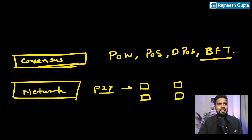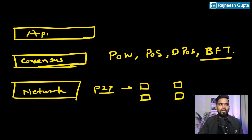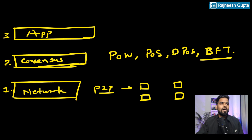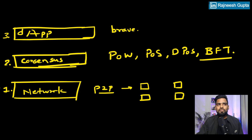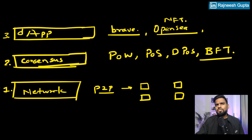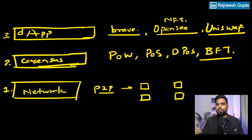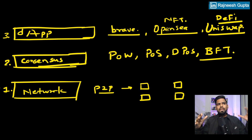On top of that we have our application layer. First is the network, second is consensus, third is the application layer — and that's where you find your dApps, your decentralized applications. You have Brave browser, OpenSea which is pretty popular as the largest NFT marketplace, and there's Uniswap which is popular for swapping cryptocurrency and as a liquidity provider — all part of a DeFi platform. This is how the blockchain layers really look, and this is where the normal user interacts.